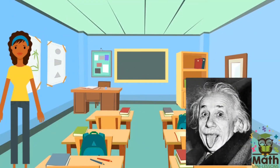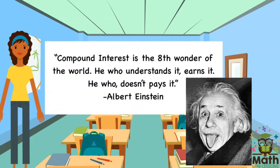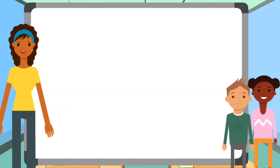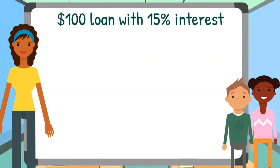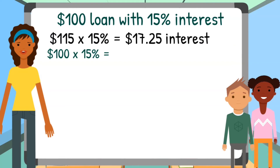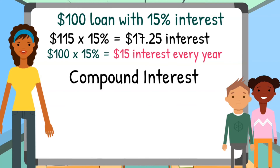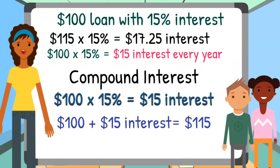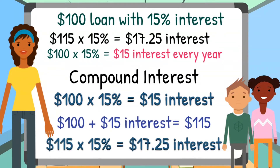Albert Einstein once said, 'Compound interest is the eighth wonder of the world. He who understands it earns it; he who doesn't pays it.' With simple interest you earn 15% of $100 every year — the interest stays the same. With compound interest, you start at 15% of $100 but add the interest to your principal, so the next year the interest is 15% of $115, not $100. The more time passes, the more the interest grows because you're charging interest on both the money borrowed and the money you've earned.